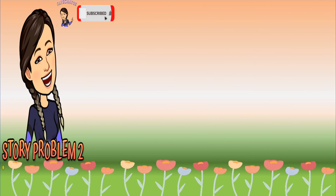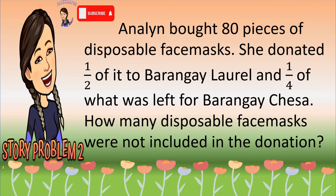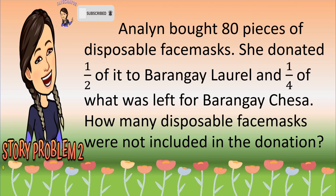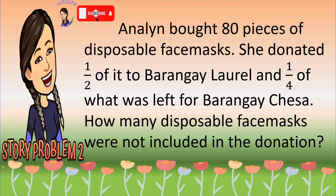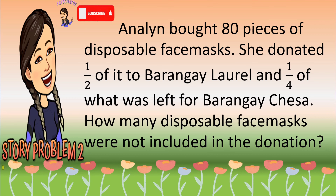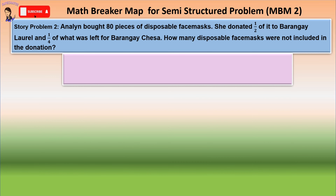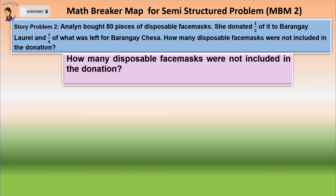Another story problem: Anna bought 80 pieces of disposable face masks. She donated one-half of it to Barangay Laurel and one-fourth of what was left to Barangay Chesa. How many disposable face masks were not included in the donation? Again, we are going to use Math Breaker Map for Semi-Structured Problems. First, let us know what is asked. In this given problem, we need to find out how many disposable face masks were not included in the donation.